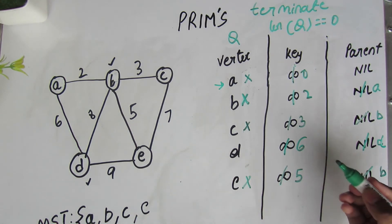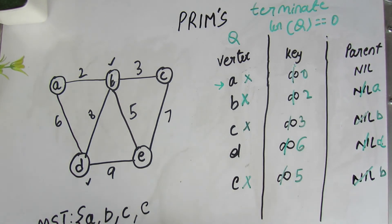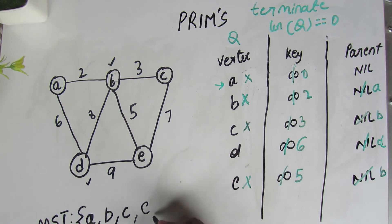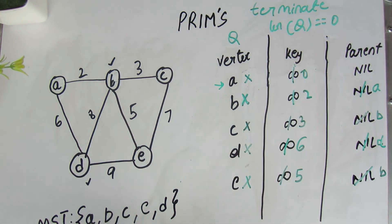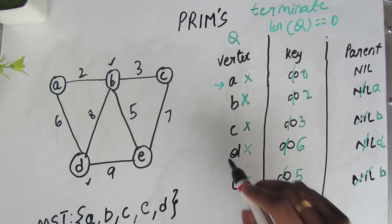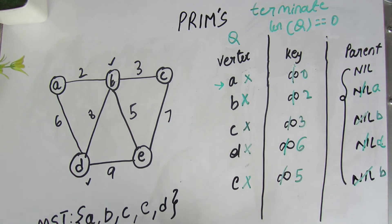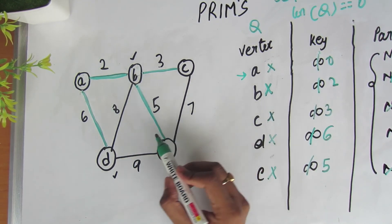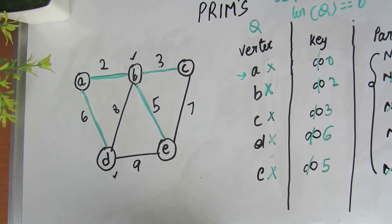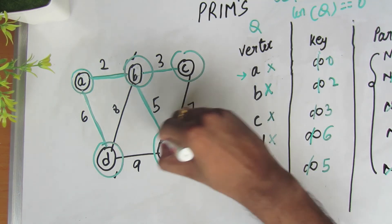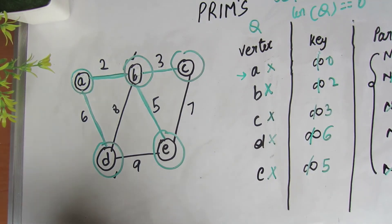The only remaining value is D with key 6. Since this is the last element there is no need to compare further, so we add D to the minimum spanning tree set and delete it from the heap. We have reached the terminating step of the algorithm as there are no vertices left. This is the final tree constructed using the greedy approach. All the green edges are part of the minimum spanning tree, with A as the root.